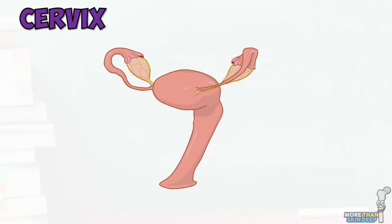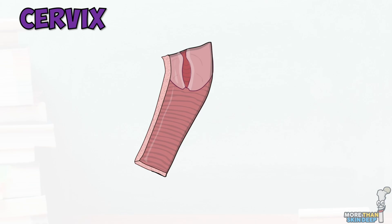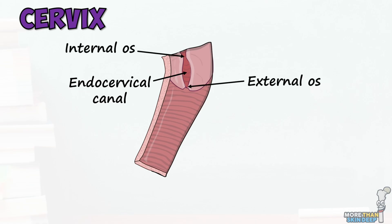The lowest part of the uterus is known as the cervix. This acts mostly as a gateway between the uterus and the vagina and protects the upper genital tract from infection. The cervix has a narrow central canal known as the endocervical canal, with further narrowings at the top and bottom known as the internal and external cervical os, respectively. The endocervical canal is lined with columnar epithelium, which produces mucus that changes in consistency throughout the menstrual cycle. The outermost part of the cervix is known as the ectocervix, which is lined by non-keratinized stratified squamous epithelium and projects into the vagina.